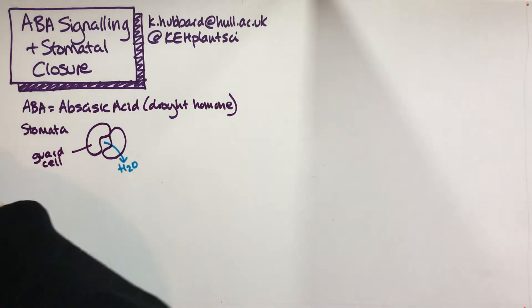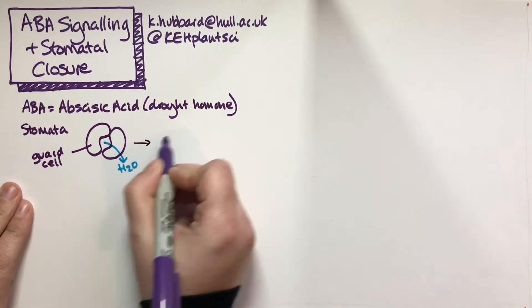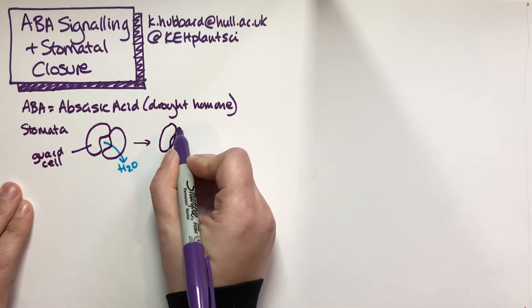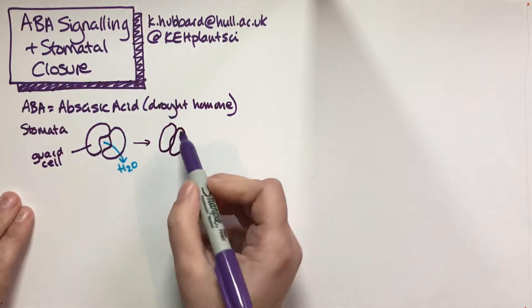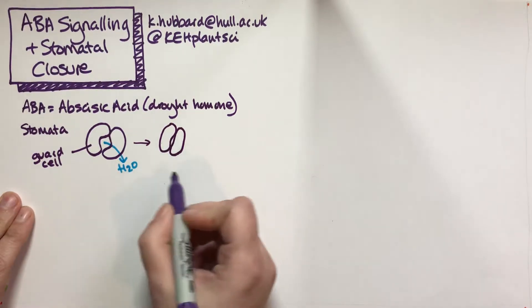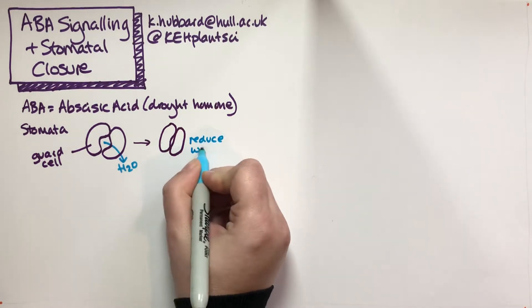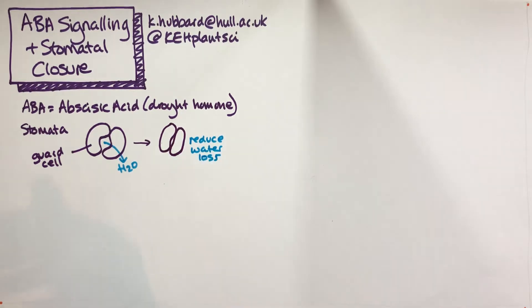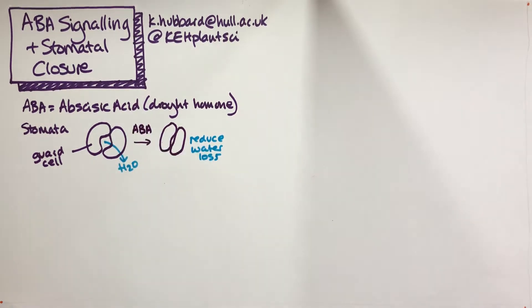In the presence of ABA, those stomata will go from open, where we're losing lots of water, to a more closed conformation. The pore will close, reducing water loss as a result of ABA signaling. This is quite a rapid response that happens within minutes, which makes it quite a quick response as far as a plant is concerned.